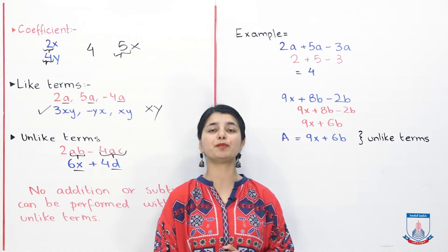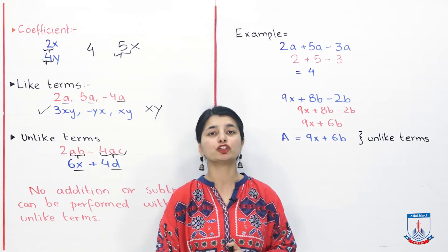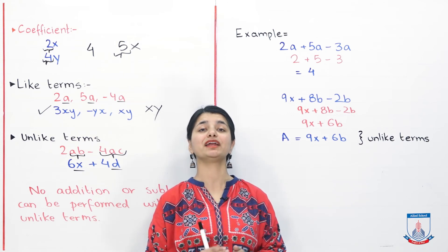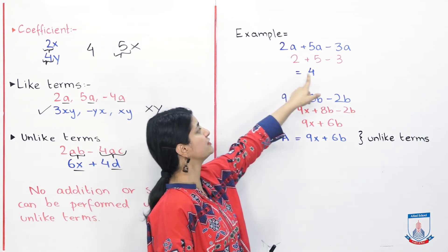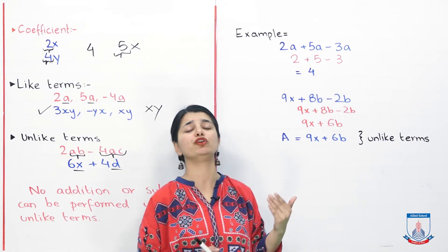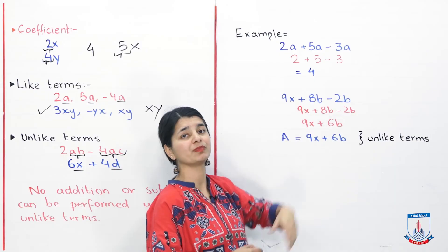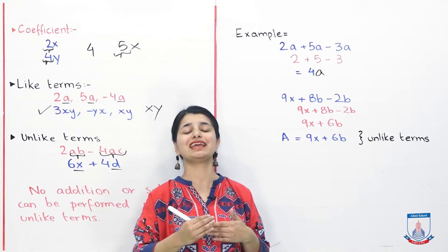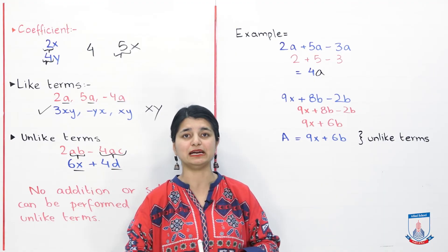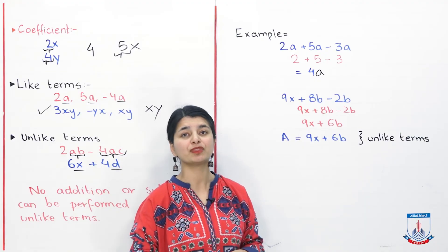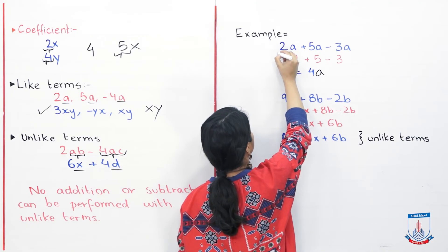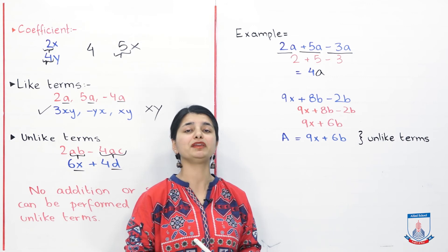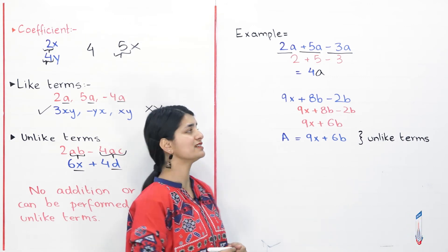Let's look at basic examples to prepare you for Exercise 8a. The first example is 2a plus 5a minus 3a. All three have 'a', which means all three are like terms. So simply do 2 plus 5 minus 3 — you can ignore the 'a' for now. Your answer is 4, and then attach the common variable: so the answer is 4a. This is how we easily solved this algebraic expression. This full expression had 3 algebraic terms.